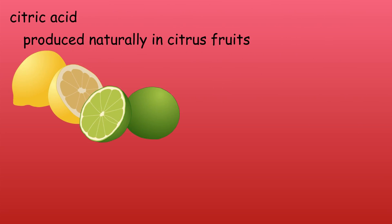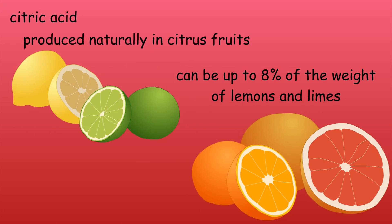Citric acid is an acid that occurs naturally in citrus fruits. Lemons and limes have higher concentrations, sometimes as much as 8% of their dry weight. Other fruits, such as oranges and grapefruits, contain citric acid but at much lower concentrations.